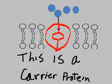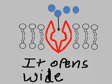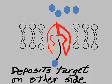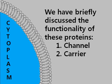This is a carrier protein. It opens wide, carries the target inside itself, and then deposits the target on the other side. So we have briefly discussed the functionality of these proteins: channel proteins and carrier proteins.